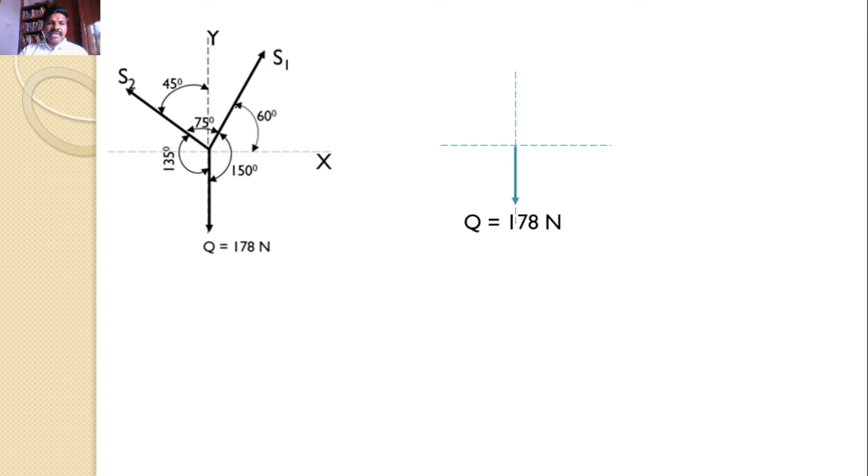Now, the force Q, since it is acting along Y axis, will be taken as is. The force S1 makes an angle 60 degrees with the horizontal, so I can resolve this force along X axis and Y axis. The X axis component is S1 times cos 60, and Y axis component is S1 sin 60.